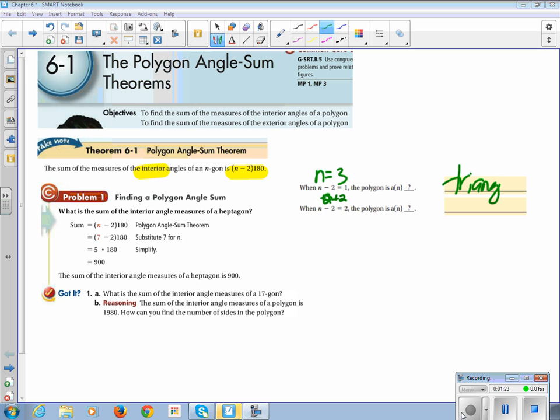Now we're working. When n minus 2 is equal to 2, you get four sides. The polygon is a quadrilateral. It could be a rectangle, it could be a parallelogram, it could be a trapezoid. It just has to have four sides.